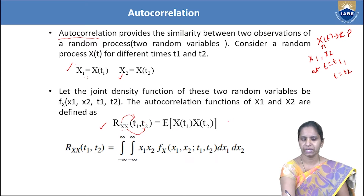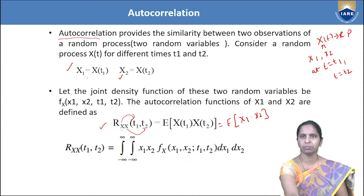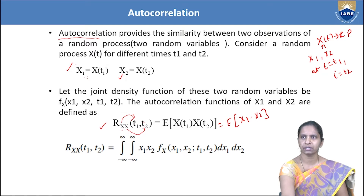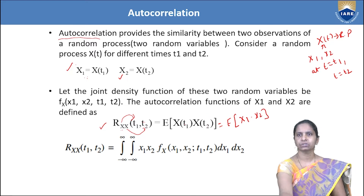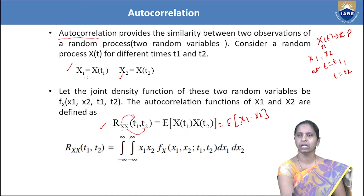So what is R_xx(t1, t2)? It equals E[x(t1) * x(t2)]. How do we get random variable x1? By keeping t = t1 in x(t). And random variable x2 by keeping t = t2. Therefore, the autocorrelation of the random process is given by R_xx(t1, t2) = E[x(t1) * x(t2)]. Here E represents the statistical average, also called expectation. For a continuous random process, the formula uses double integration with the joint density function.